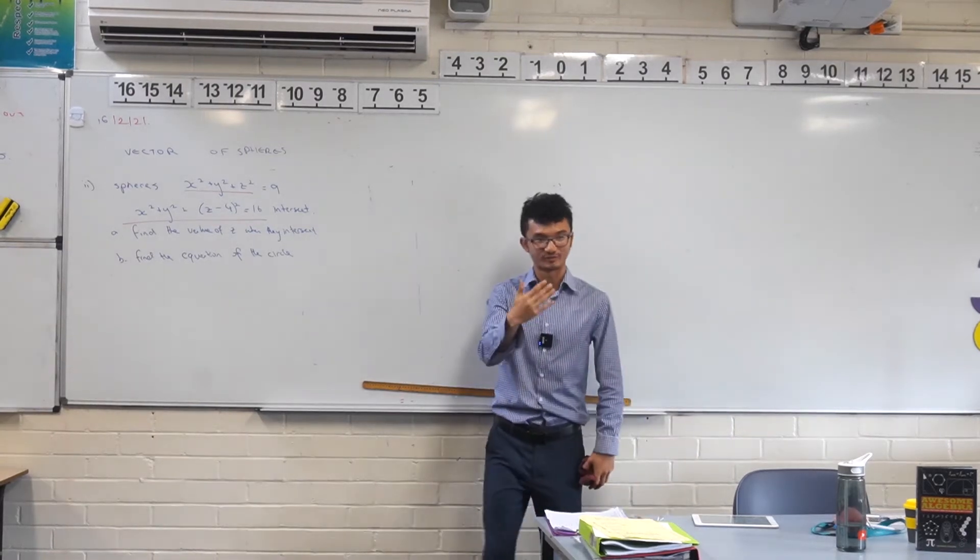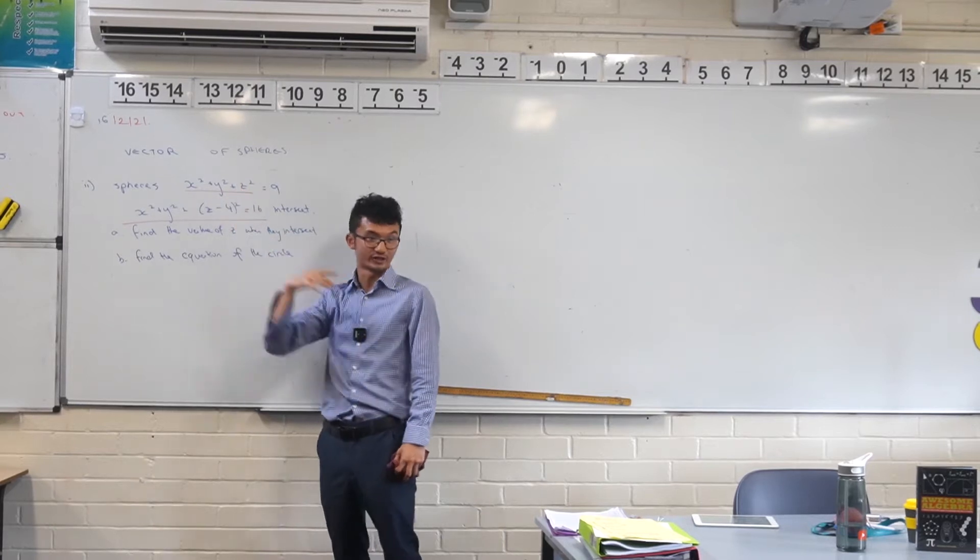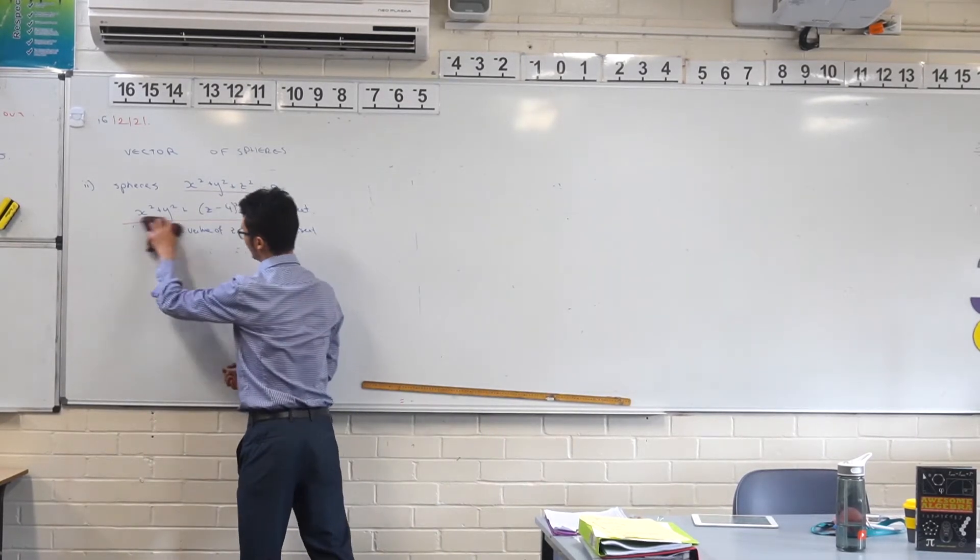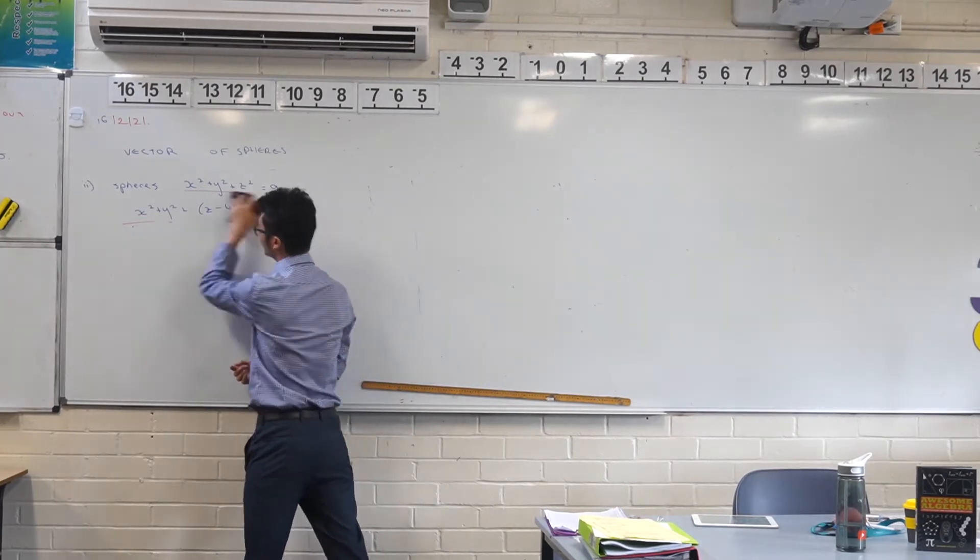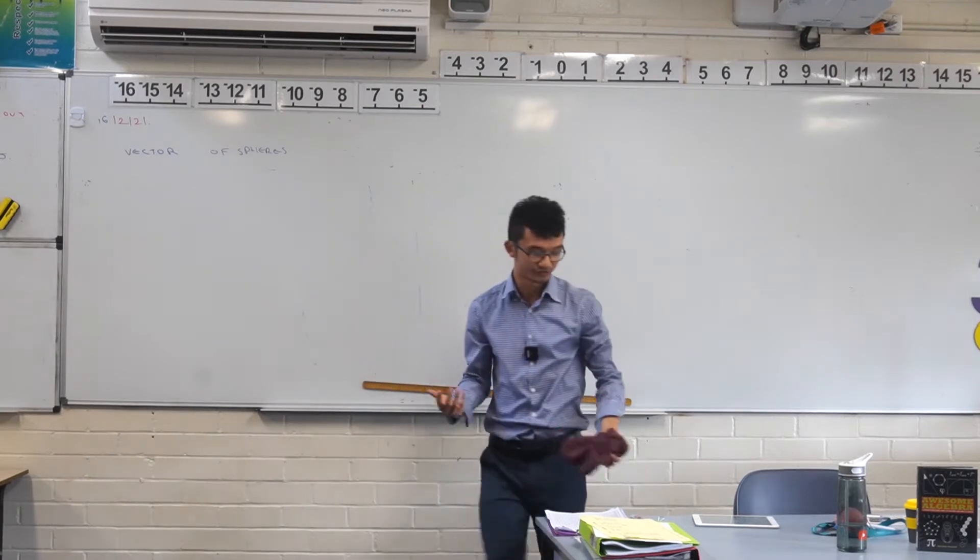Do you remember some type of parametric equations? This one here we would call a Cartesian equation because we're using x's, y's and z's. But actually, when we look at vectors, we can also consider a vector equation of a sphere.